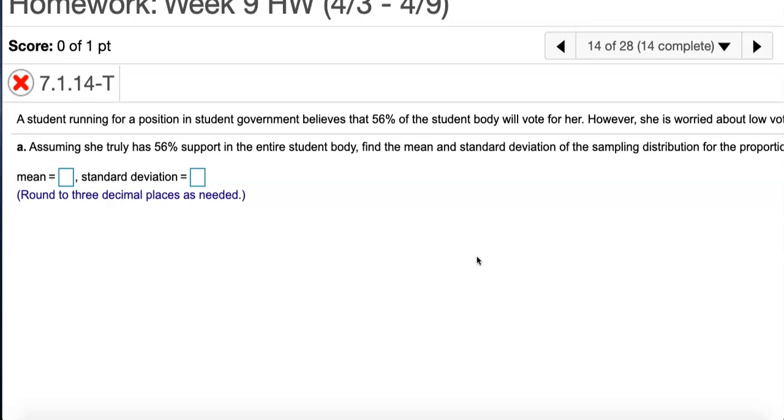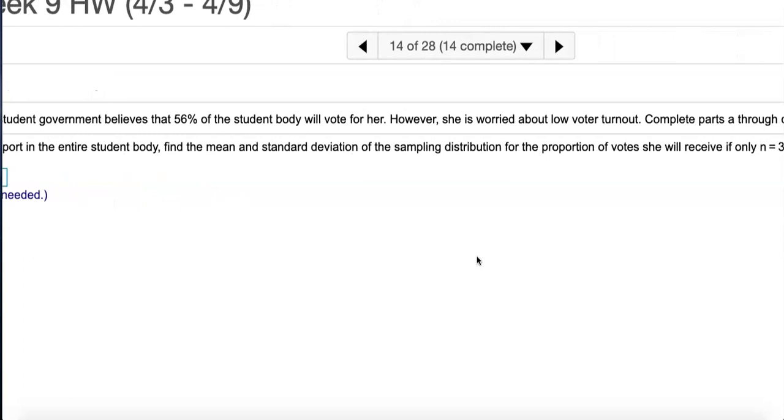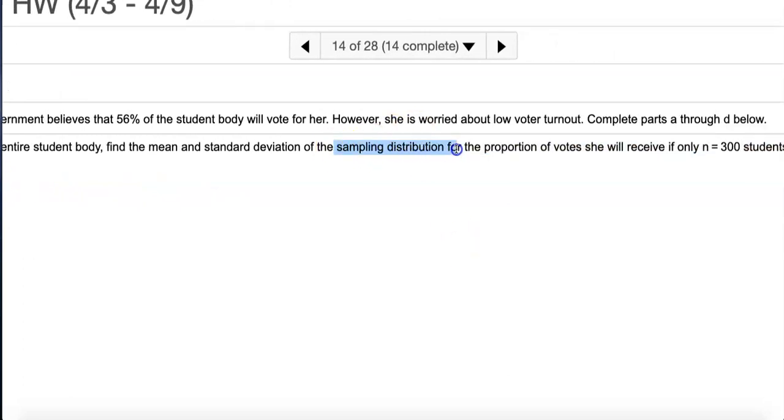My number is 56%, maybe your number is 55% or 47%, so don't use my exact number, just use this as an example. Find the mean and standard deviation—I would highlight this word—sampling distribution for the proportion.